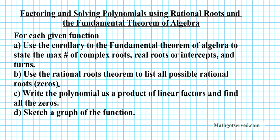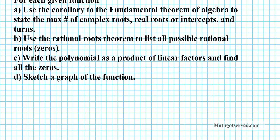So let's go ahead and take a look at example one. We are considering the polynomial equation x to the third minus seven x squared plus seven x plus fifteen equals zero.